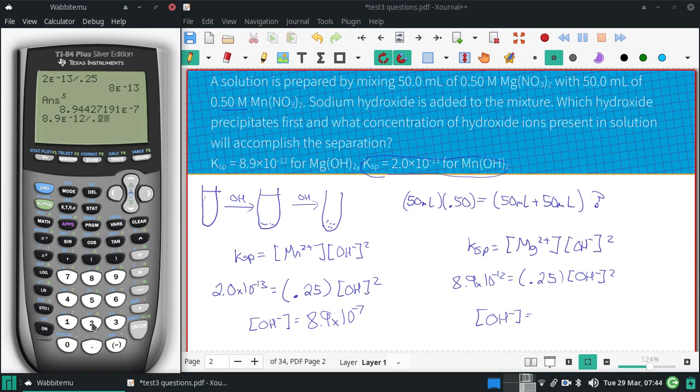Divided by 0.25 and take the square root of that, and get 6.0 times 10 to the negative 6.